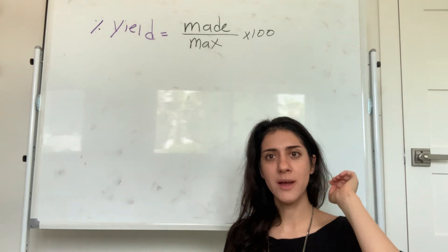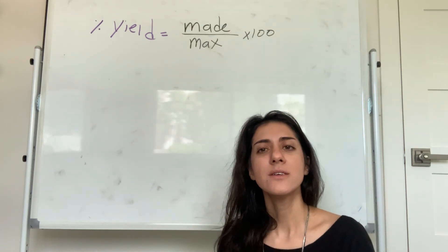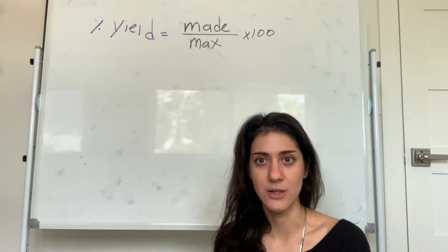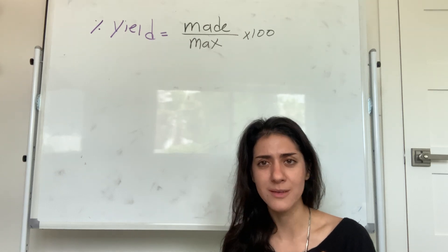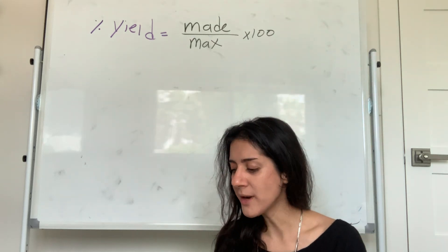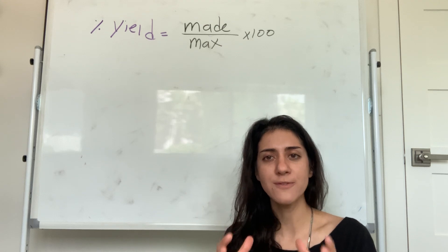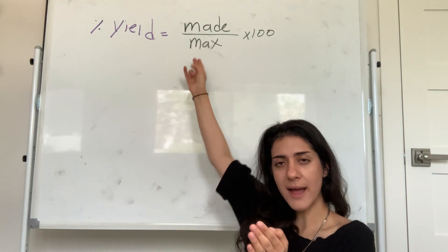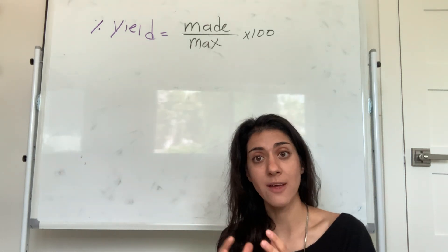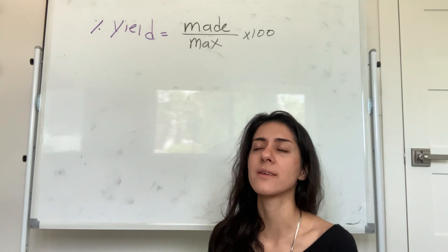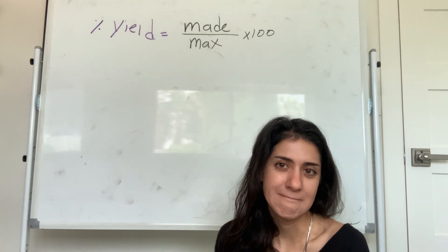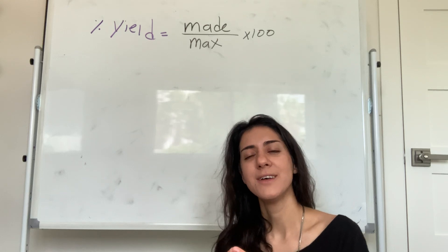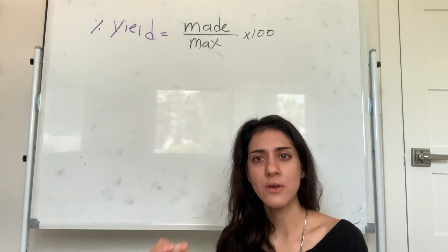Let me give you a non-chemistry baking example. Let's say I want to make cupcakes. I go buy enough materials — flour, eggs, whatever you make cupcakes with — to make 100 cupcakes. So I have enough stuff to make 100 cupcakes. I start making them, I drop some of them, some are going to be burnt, some are going to be under-baked. I end up with 80 edible cupcakes.